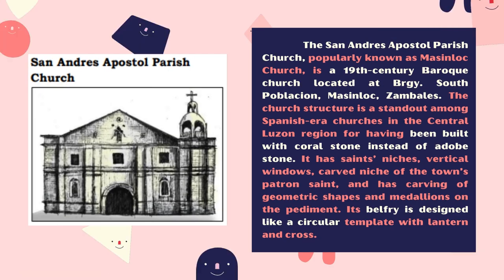San Andres Apostol Parish Church, popularly known as Masinloc Church, is a 19th-century Baroque church located at Barangay South Poblacion, Masinloc, Zambales. The church structure stands out among Spanish-era churches in the Central Luzon region for having been built with coral stone instead of adobe stone. It has vertical windows, carved niches with the town's patron saints, and carvings of geometric shapes and medallions on the pediment. Its belfry is designed like a circular temple with a lantern and cross.